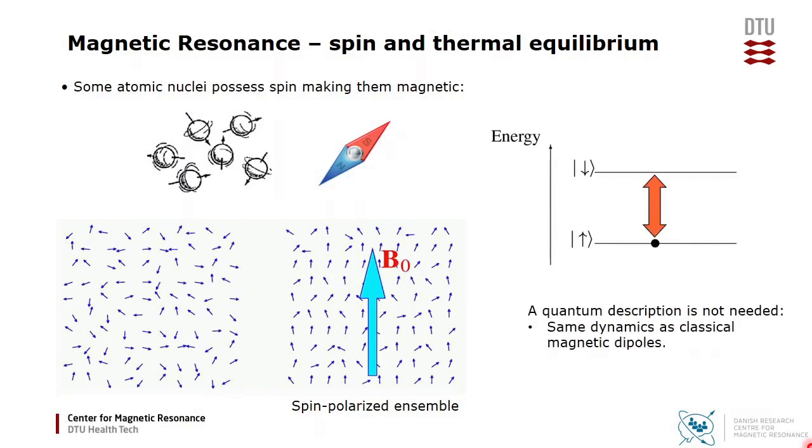You may have learned a quantum description of this, but that is not really needed, since quantum mechanics predict the same dynamics as classical magnetic dipoles. However, quantum mechanics is convenient for calculation of the equilibrium magnetization, but you will get the same result with a semi-classical calculation.